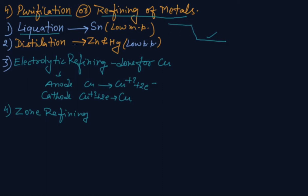In distillation we are considering the boiling point of metal and impurities. It is the process to purify those metals which have low boiling point like zinc and mercury. Impure metal evaporates to obtain pure metal as a distillate.